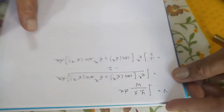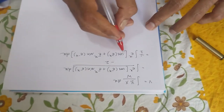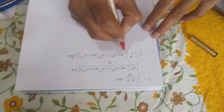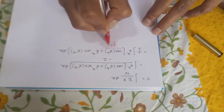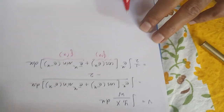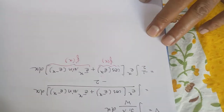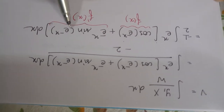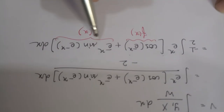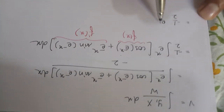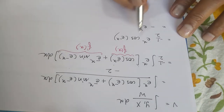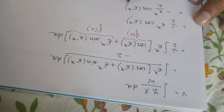Whenever you have an integration of the type e raised to x into something plus something, the first thing to keep in mind is that it is probably of the type e raised to x into f(x) plus f dash of x. Let us verify this: if cos of e raised to minus x is f(x), then its derivative is minus sin of e raised to minus x into the derivative of e raised to minus x, which is minus e raised to minus x. So yes, this is your f dash of x, and the answer is e raised to x into f(x). So v equals minus e raised to x upon 2 times cos of e raised to minus x.